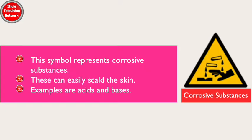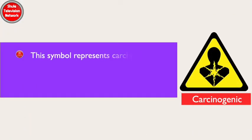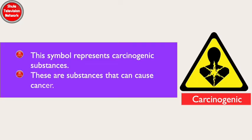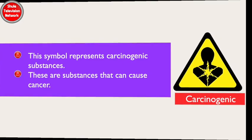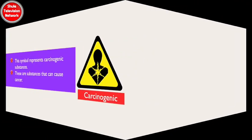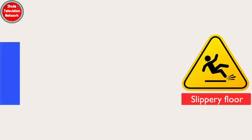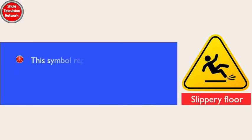This symbol represents corrosive substances. These can easily scald the skin. Examples are acids and bases. This symbol represents carcinogenic substances — these are substances that can cause cancer.